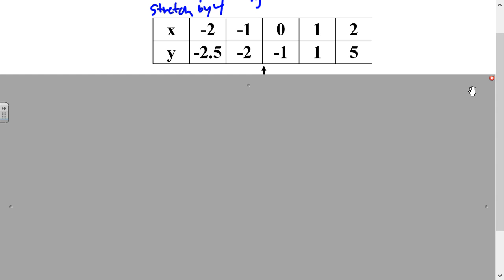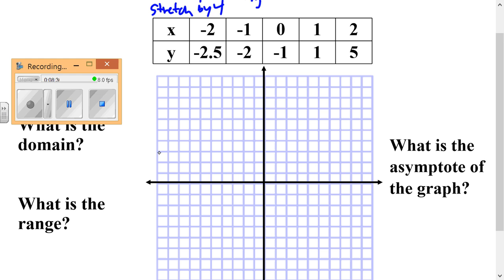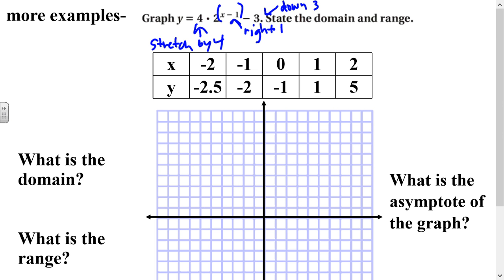We're going to graph these points and also talk about domain and range. The points are: negative 2, negative 2.5; negative 1, negative 2; 0, negative 1; 1, 1; and 2, 5.